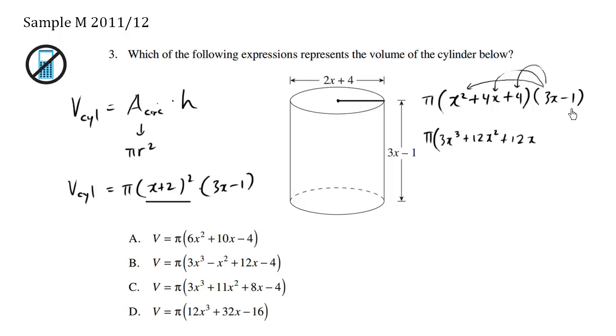Now I'm going to go negative 1 times x² is going to be negative x². Negative 1 times positive 4x is going to be negative 4x. Negative 1 times positive 4 is going to be negative 4. This is where I look at all the exponents of 3, which is only one term, so it's just left alone.